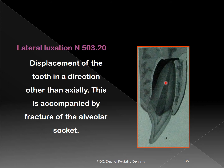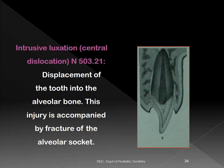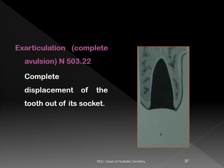Intrusive luxation — called central dislocation — means the tooth has been driven into the bone. Such teeth are very firm and give a metallic sound on percussion. Finally, exarticulation — which is avulsion — means the tooth has completely come out of its socket.